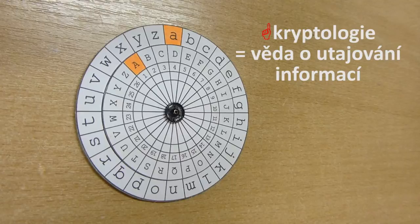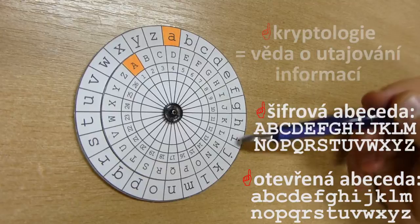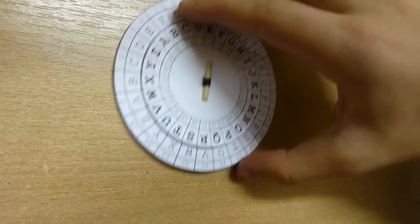V kryptologii, jak se věda o utajování informací nazývá, je zvykem psát šifrovou abecedu velkými písmeny a abecedu otevřenou písmeny malými. Můžete si to tak napsat i na váš disk. Ale my, protože se nám při šifrování zdají velká písmena přehlednější, jsme si odlišili na našem disku šifrovou abecedu od té otevřené použitím zvýrazněného písma.